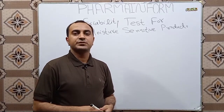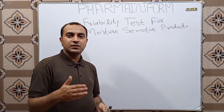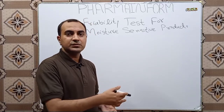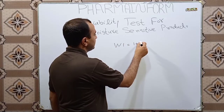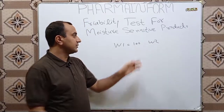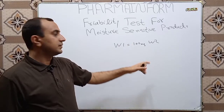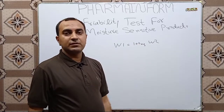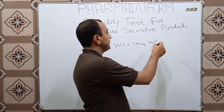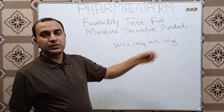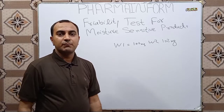The problem is that when we perform friability test for moisture sensitive products, we find our initial weight and after friability we calculate our final weight. The final weight is larger than the initial weight. For example, W1 is 100 mg, but W2 after friability should be less than 100 mg. However, for moisture sensitive products, the final weight is more — suppose 102 mg — and when we calculate friability it comes in negative values.